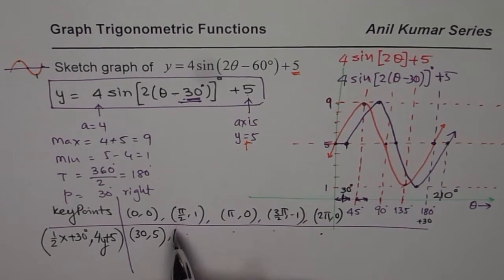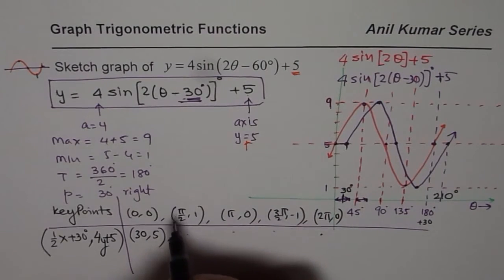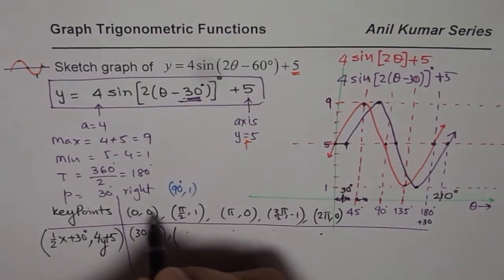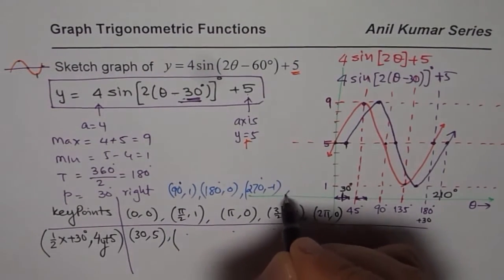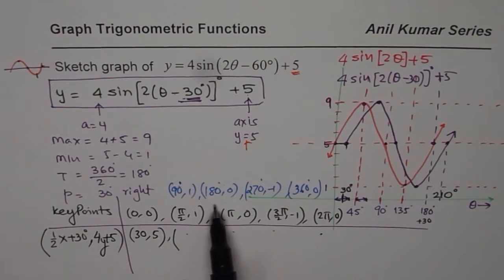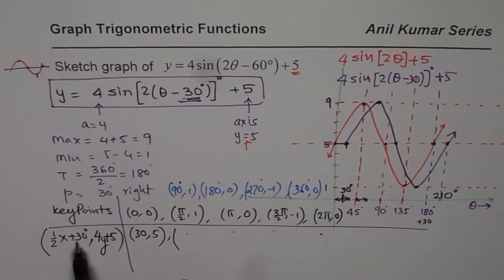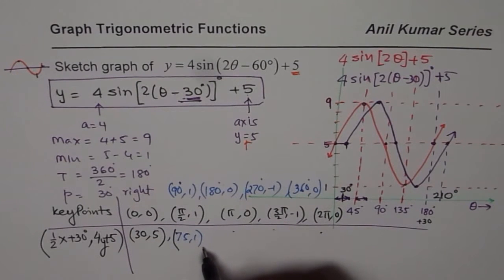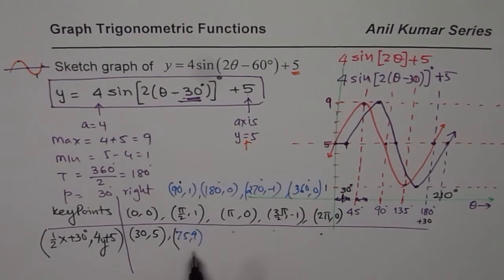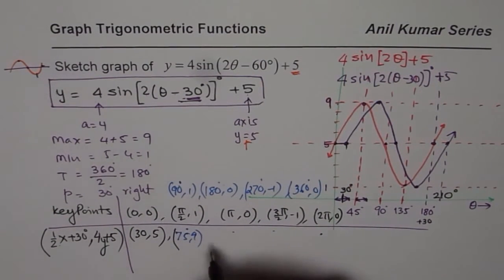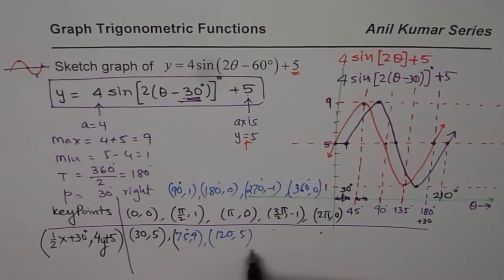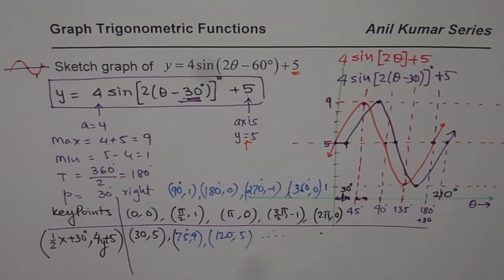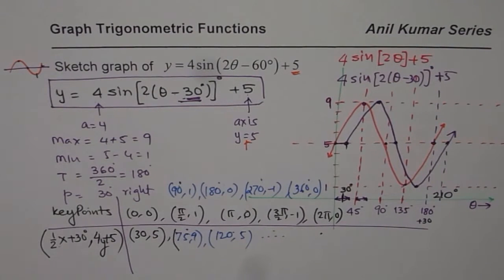I should have written all this in degrees, so let me correct that. I should have written here 90 degrees is 1, zero zero is fine, 180 degrees is 0, then 270 degrees is minus 1, and 360 degrees is 0. Now you can do half of these degrees. Half is 45, 45 plus 30 gives you 75 with y value 9. Then 180 half is 90, 90 plus 30 is 120 with y value 5. Likewise you can do your calculation to get the points, then join them. That is another straightforward and easy way of doing it.